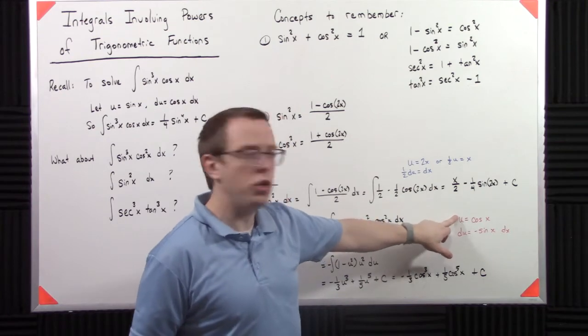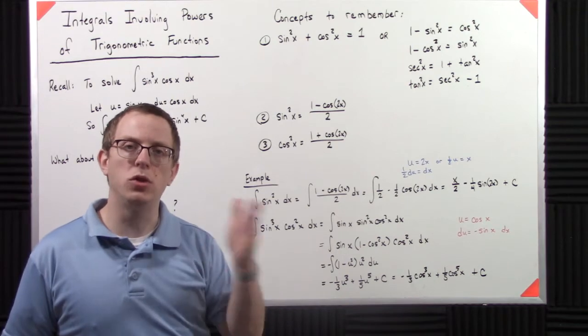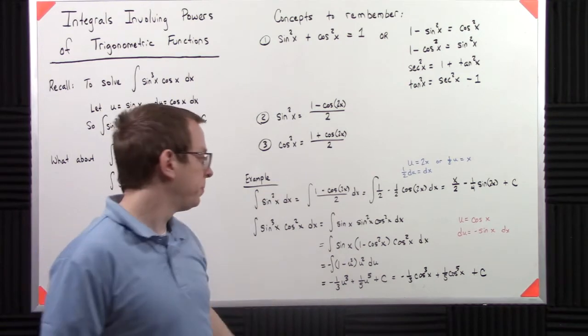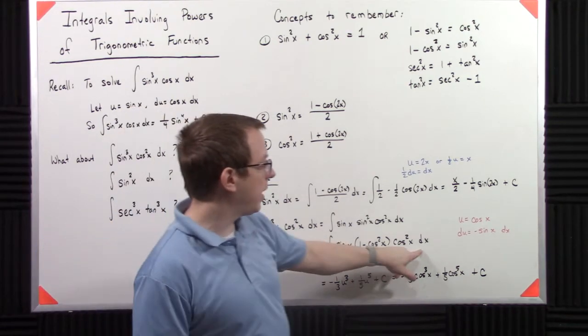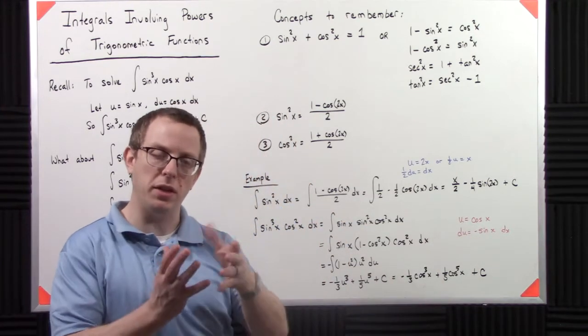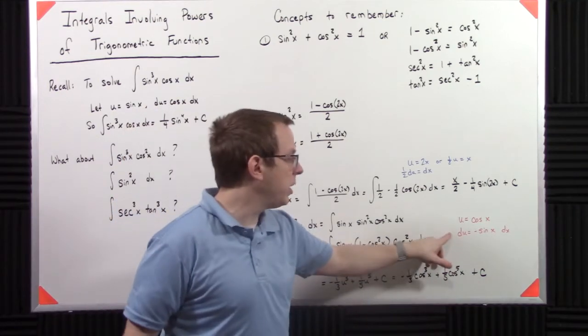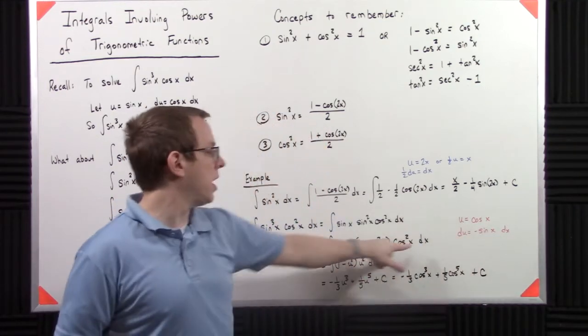I can say, all right, u is cosine of x. So that will turn all those cosine squareds into u squareds. And then with this sine x dx, that gets absorbed when I take that differential step. So when I take the du, I have a negative sine of x dx. So I can absorb that. So it's really negative du equals sine x dx.